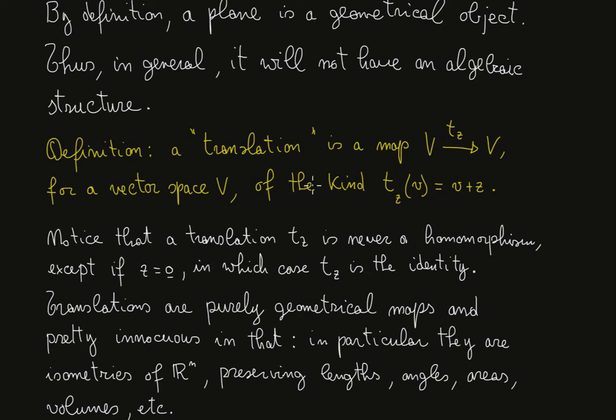This is because if z is not the identity, the map Tz will not send the zero vector to the zero vector. That is not the zero vector if z is not the zero vector. And we have seen that the necessary condition for a map to be a homomorphism is that it sends the zero vector of the domain to the zero vector of the codomain.